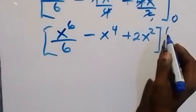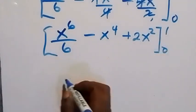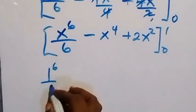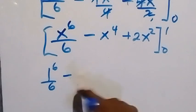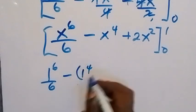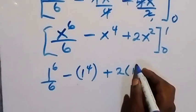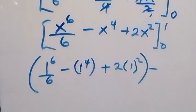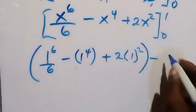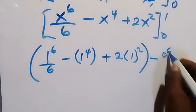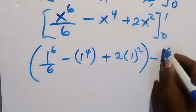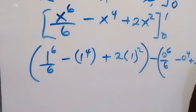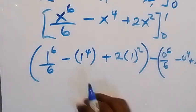We substitute the upper limit first — wherever we see x we put 1 — then minus the lower limit. That gives us: 1⁶ over 6 minus 1 to the power 4 plus 2 times 1 squared, then minus the lower limit: 0⁶ over 6 minus 0⁴ plus 2 times 0². Everything in the lower limit is 0.